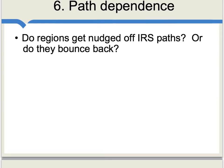Yet another way to think about increasing returns to scale theories is to ask questions about path dependence. Do regions get nudged off increasing returns to scale paths, or do they bounce back? If you view productive success as the result of basic fundamental endowments which are not going away, you would think that if a country or region gets nudged off a path, it will mean-revert and get back on that same production path. Alternatively, if it's a matter of accumulated experience based only on some very small initial advantage, it may be easier for a region or sector to get nudged off its path of success.